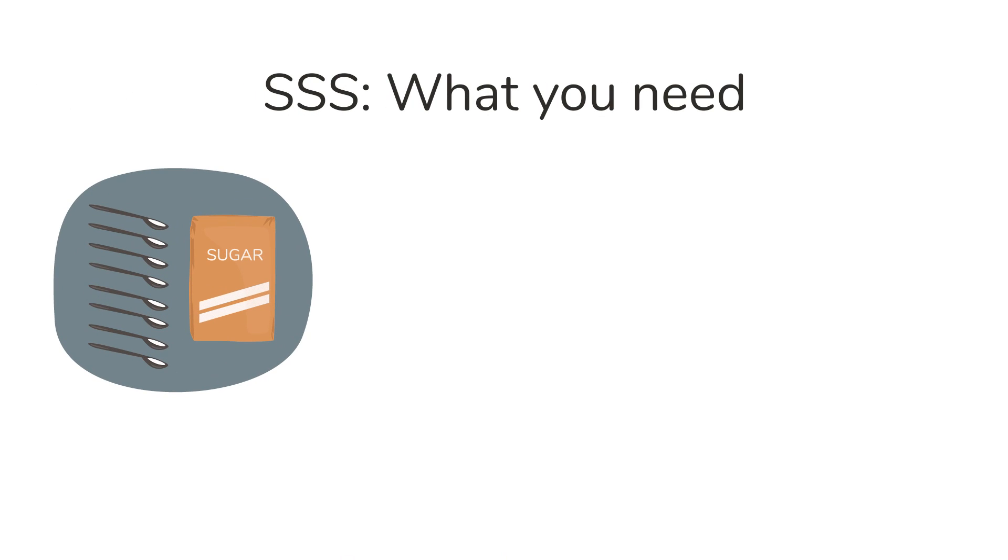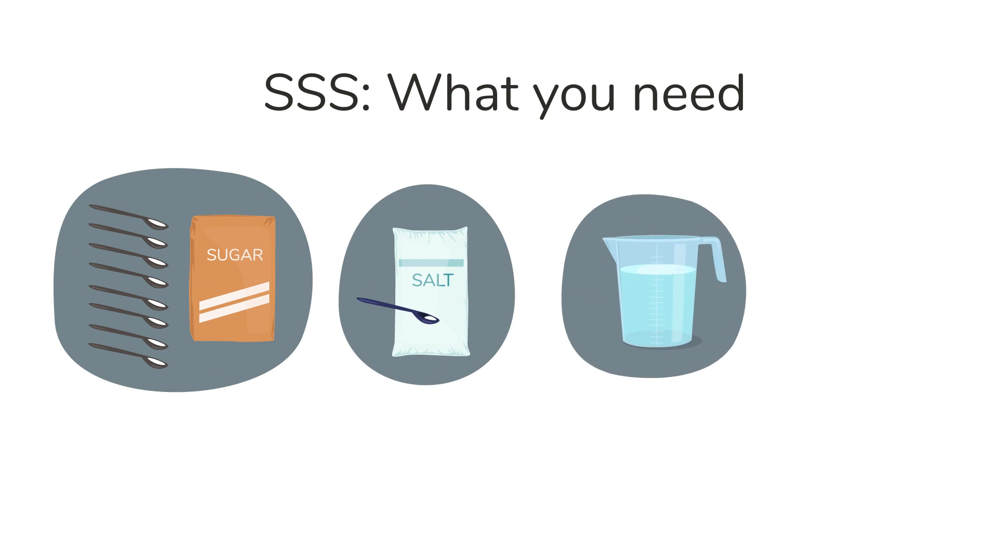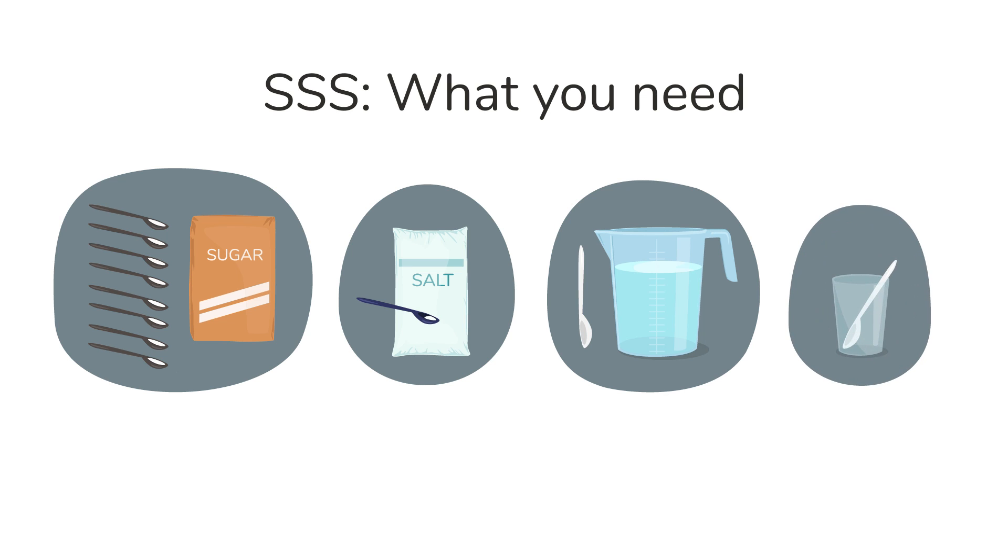For the SSS you will need 8 level teaspoons of sugar, half a level teaspoon of salt, a container with one liter of clean or boiled and cooled water, a spoon for mixing the solution, a cup and small spoon for giving the solution.